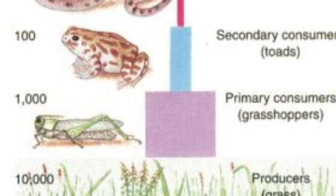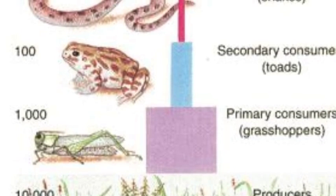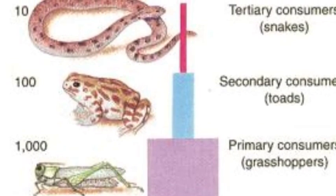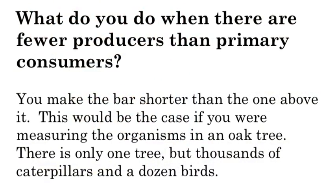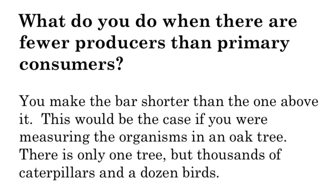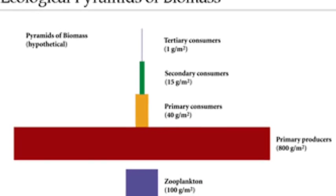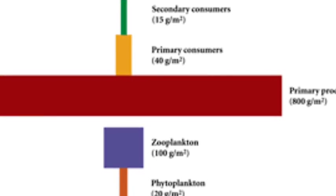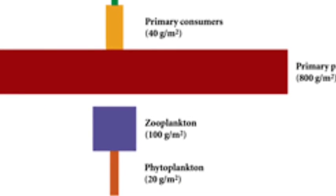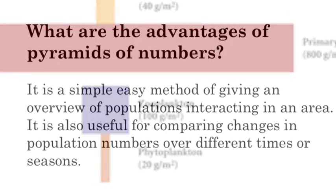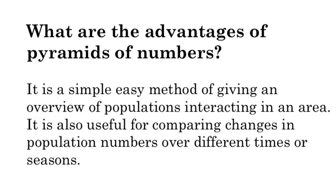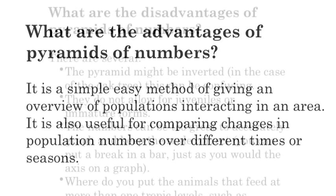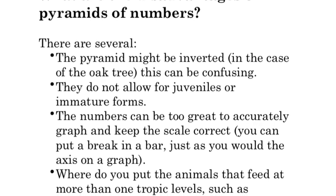We estimate population size using different techniques, count all producers and put them on one level, then count all primary consumer populations and add them together, then secondary consumers — and it's not just grasshoppers and toads, it's all of them. What do you do when there are fewer producers than primary consumers? This happens often in lakes. The bottom picture shows a lake where there's actually more zooplankton than phytoplankton — we just make the phytoplankton square smaller to accurately represent the numbers. The advantage is it's a quick and easy way to see how many of each kind there are, and it allows us to compare over time to see if anything's changing.